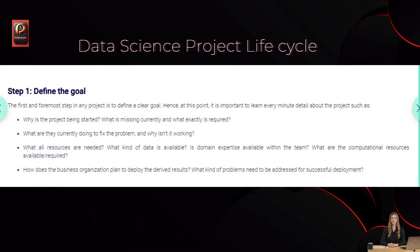Step 1: Define the goal. The first and foremost step in any project is to define a clear goal. At this point, it is important to learn every minute detail about the project, such as: Why is the project being started? What is missing currently and what exactly is required? What are they currently doing to fix the problem and why isn't it working? What resources are needed? What kind of data is available? Is domain expertise available within the team? What are the computational resources required? How does the business organization plan to deploy the derived results?